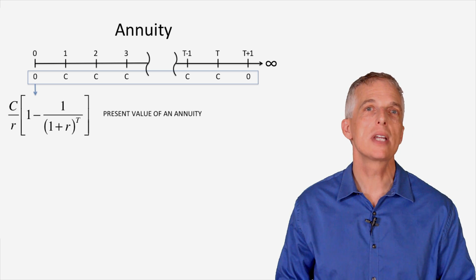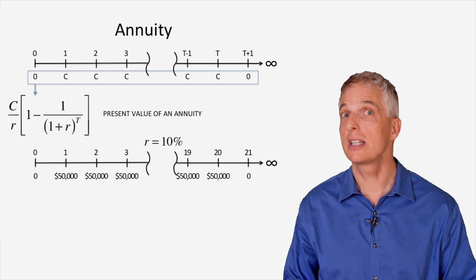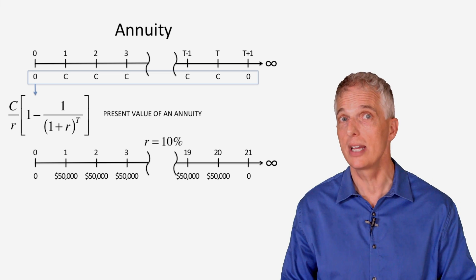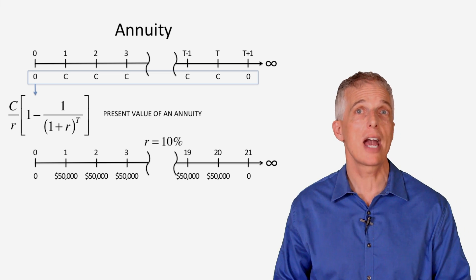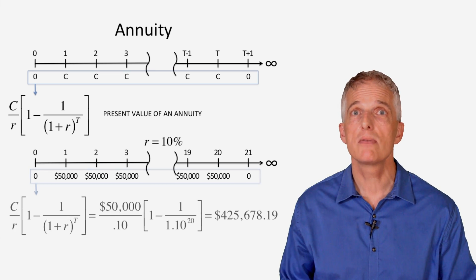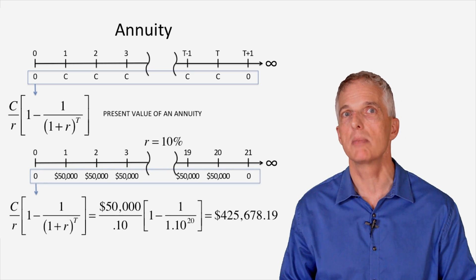For example, assume we are promised an annual payment of $50,000 per year for 20 years when interest rates are at 10%. Though we will receive cash payments totaling $1,000 over 20 years, we know the present value of these payments is much less than $1,000.